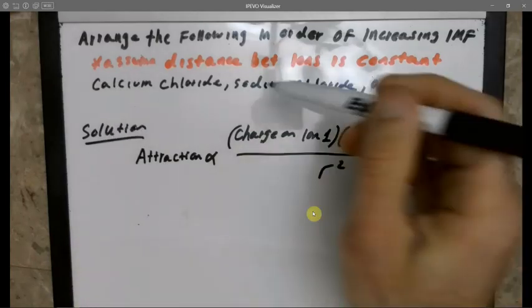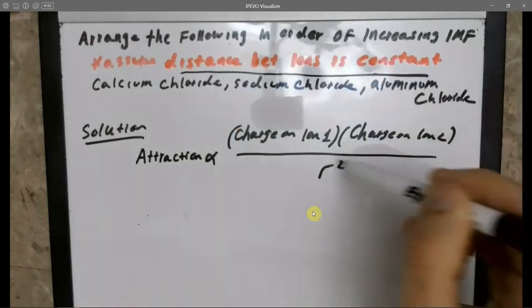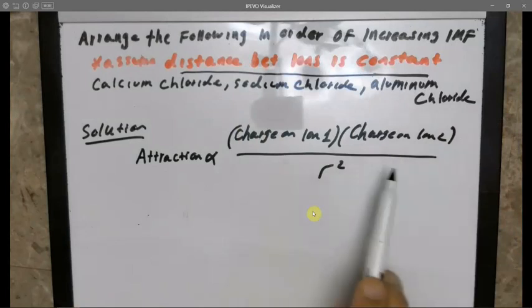I say here that the distance between the ions is constant, so I don't care about this R squared. It's going to be constant for all three. So really I'm going to look at the numerator.